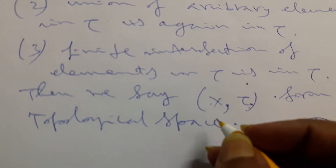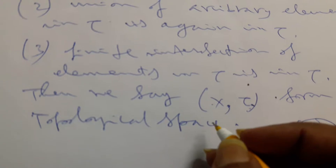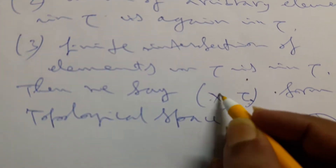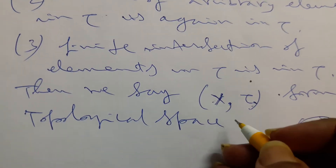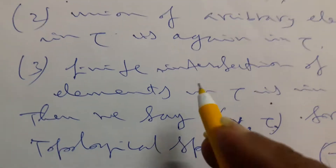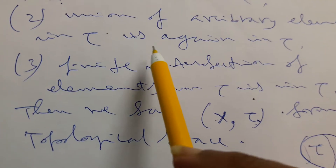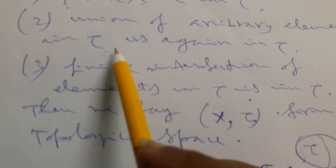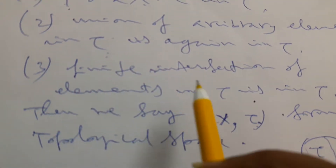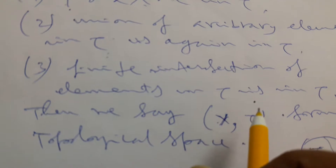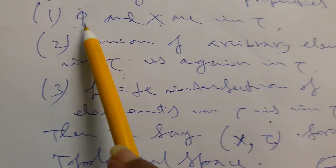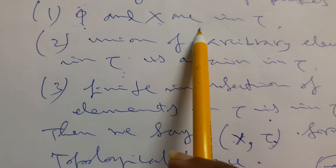That is a point set topology. In any real line, if we consider numbers and operate on them, their union is also in this set. And finite intersection also satisfies this criteria, as do the trivial cases.